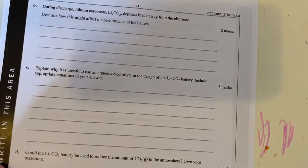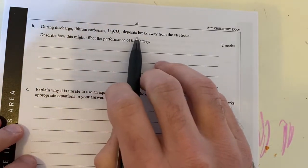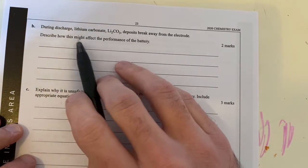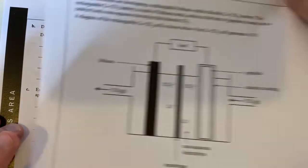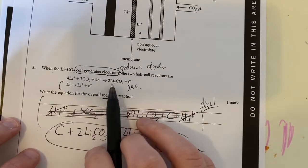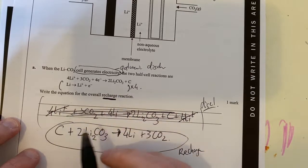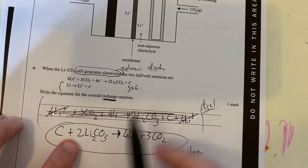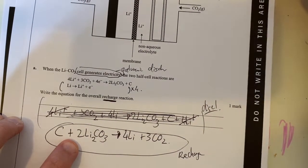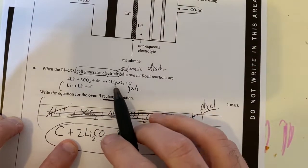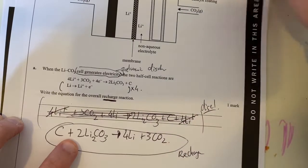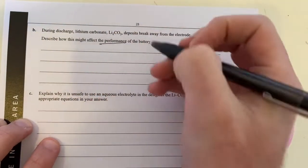During discharge, lithium carbonate breaks away from the electrode. How might this affect the performance of the battery? So what we're saying is this is created and it breaks away from my thing. Important thing in rechargeable batteries is the fact that our products must stay in contact with our electrodes. So if this is breaking away, it's going to stop the recharge from happening. So I need to talk about the performance.